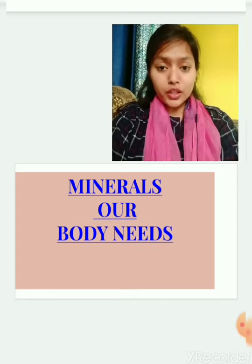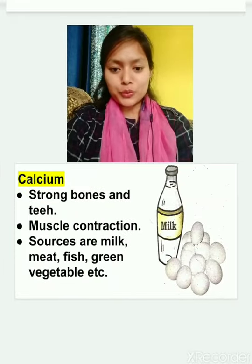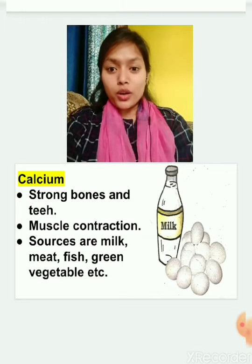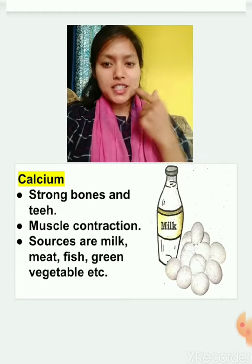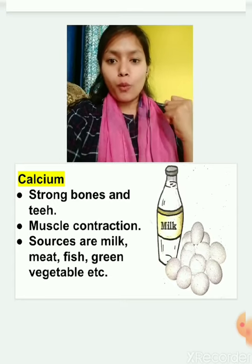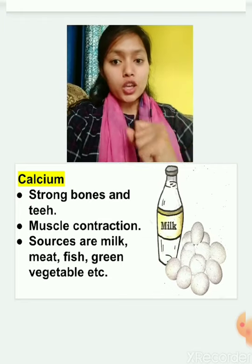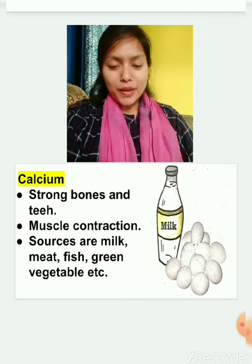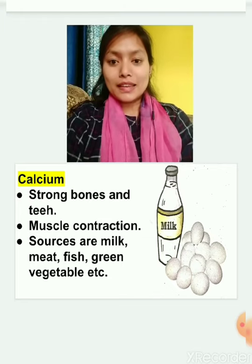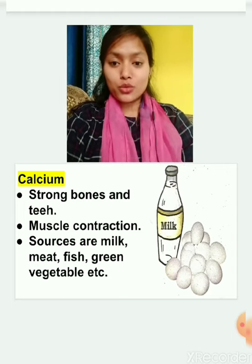Now let us move to the important minerals needed by our body. Along with vitamins, we also need minerals, and that too in small quantity. The first mineral is calcium. Calcium is required for bones and teeth — it keeps them healthy and helps in muscle contraction. Sources of calcium include milk, egg, fish, and green vegetables. Milk is the major source of calcium.